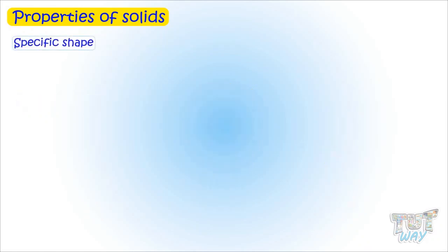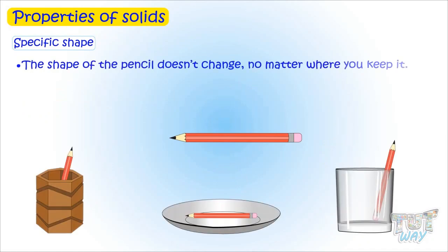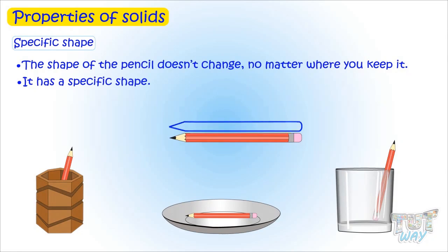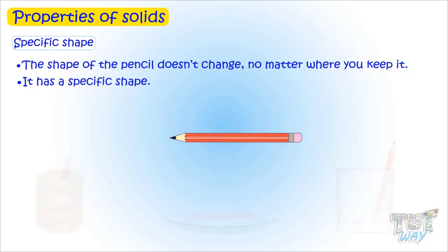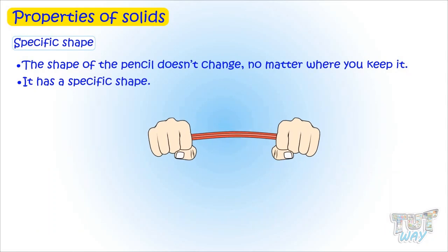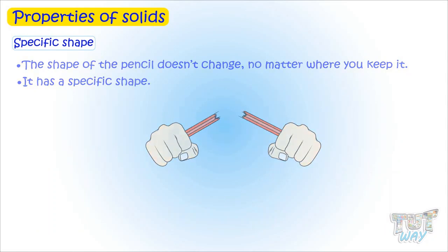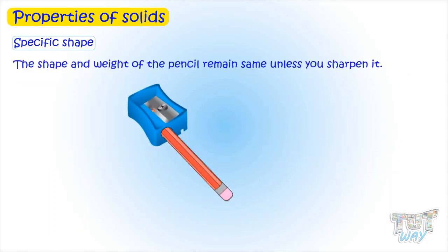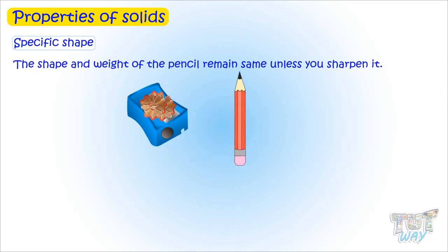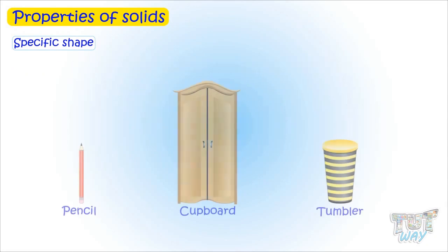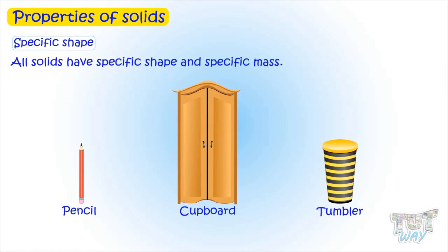If you have a pencil and keep it anywhere, its shape will not change. It has a specific shape and will not change unless you apply some force to it — for example, if you sharpen it, it will become smaller. But otherwise its shape doesn't change no matter where you keep it. Similarly, all solids have specific shape and specific mass.